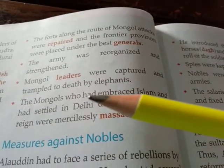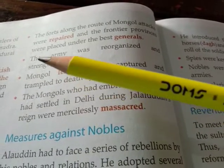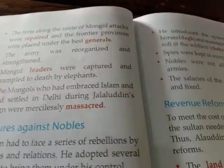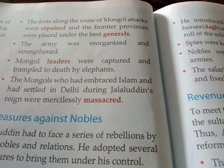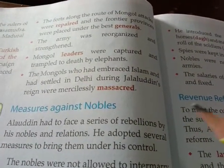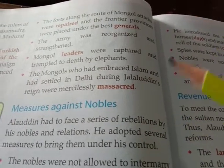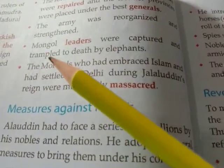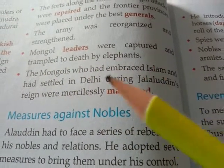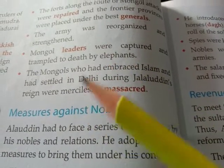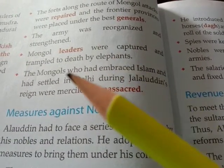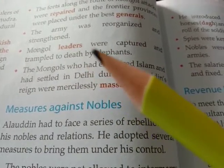The second defense measure Alauddin took was that the army was reorganized and strengthened. Reorganized means soldiers were regularly transferred and given training, and strengthened means recruitment took place several times. The third measure was that Mongol leaders who were captured were trampled to death by elephants, so they would not dare return.